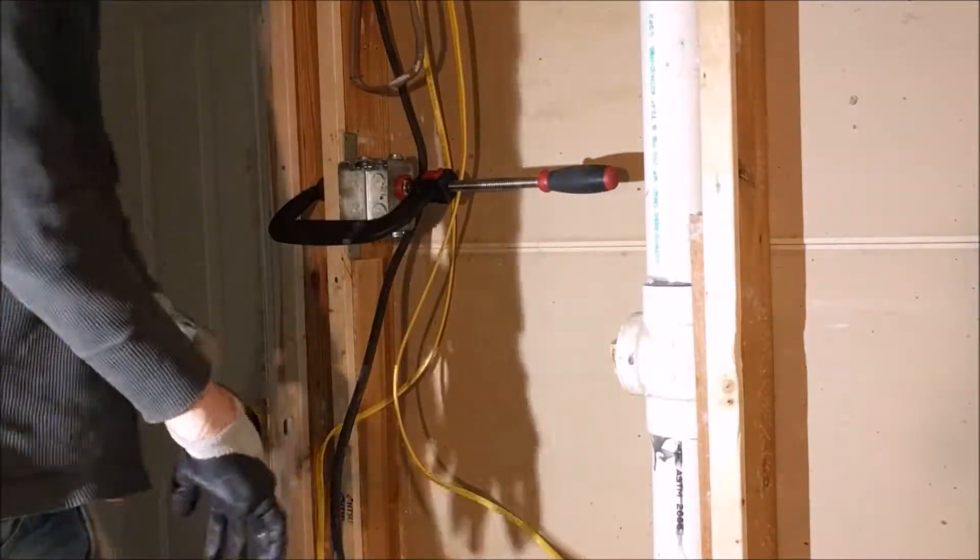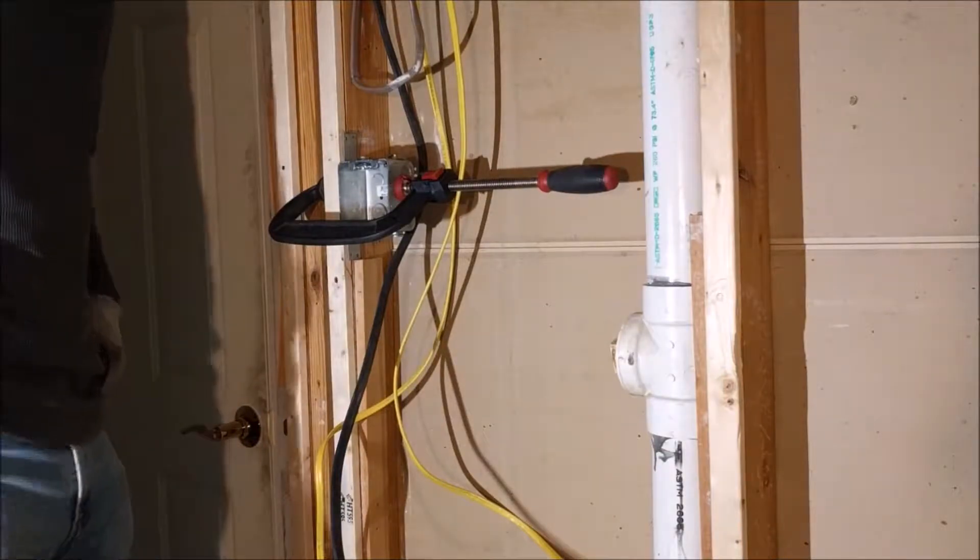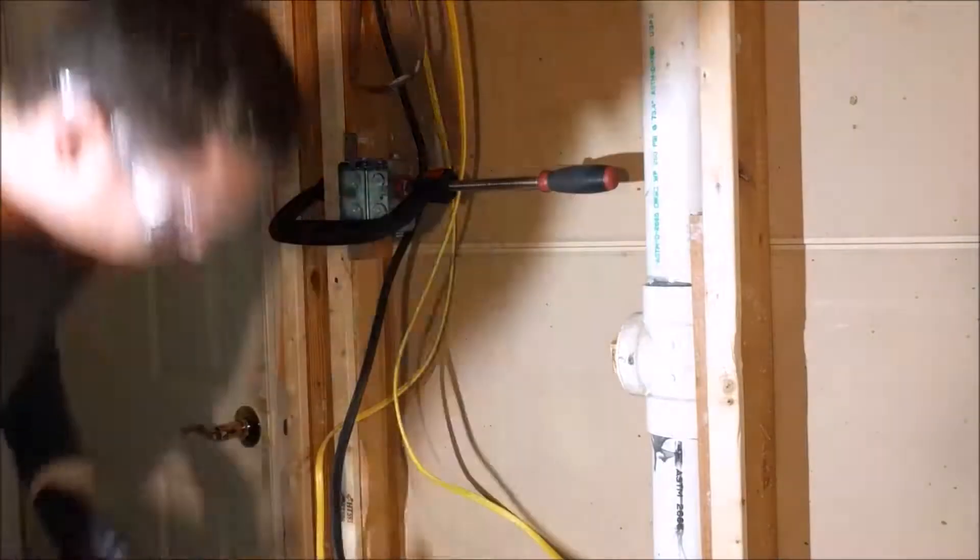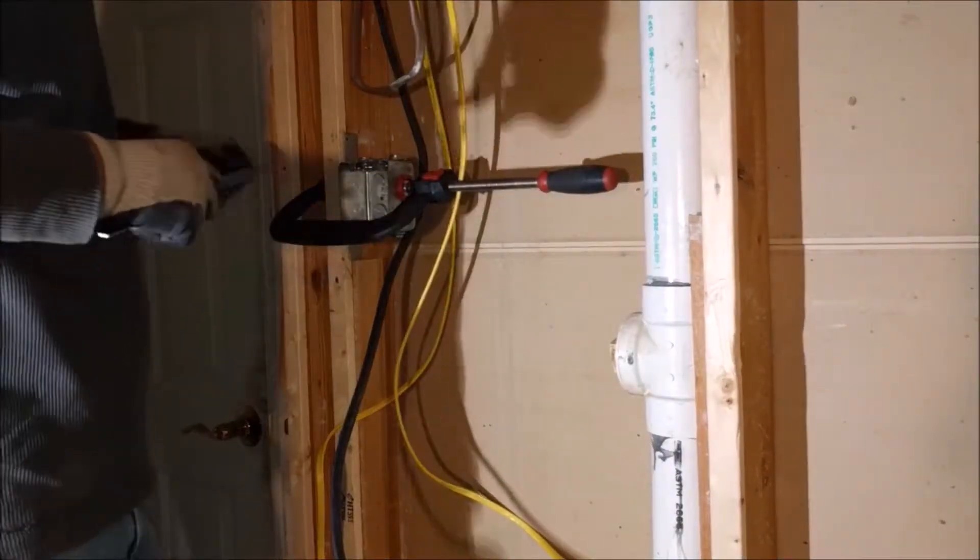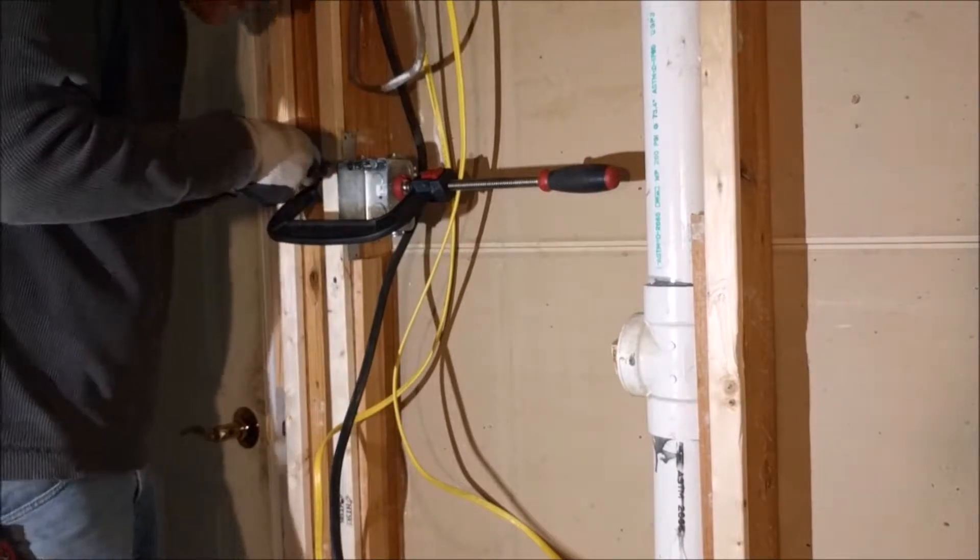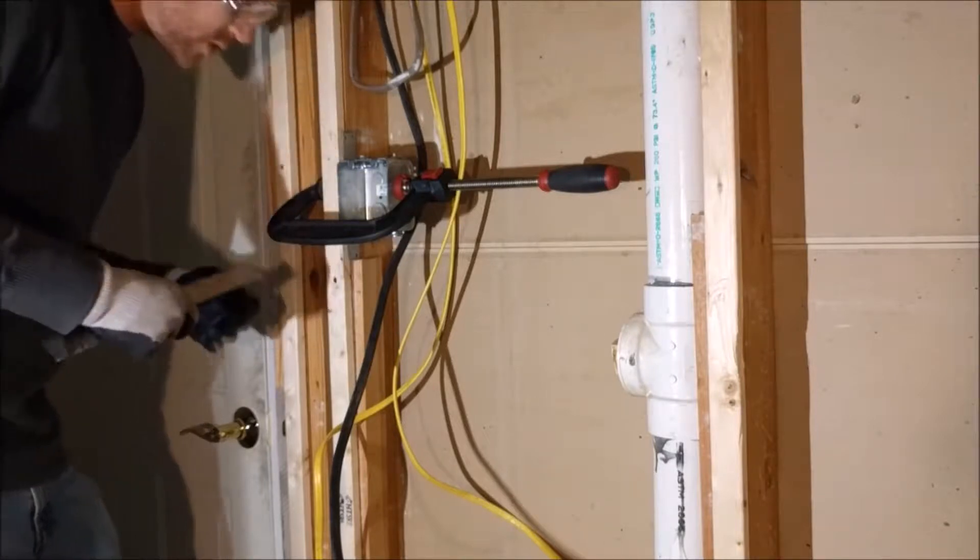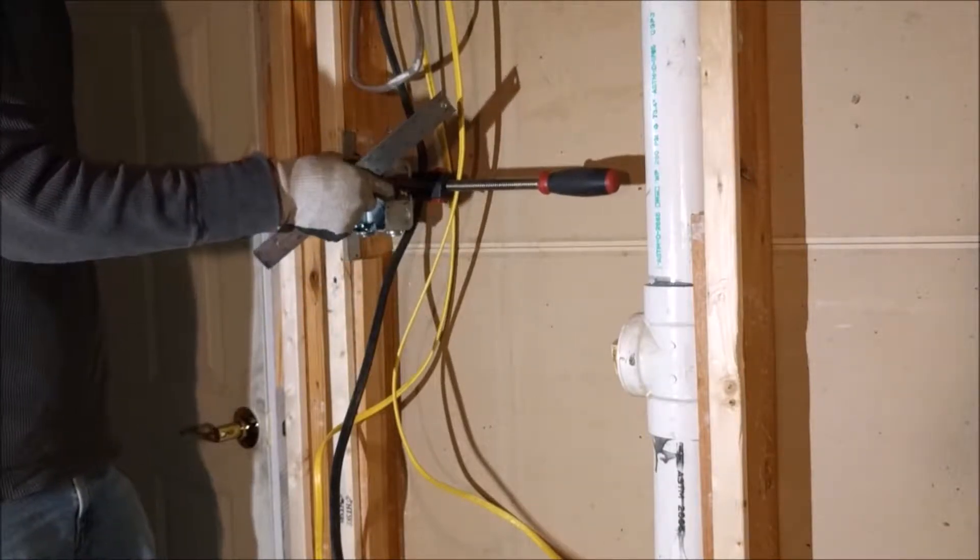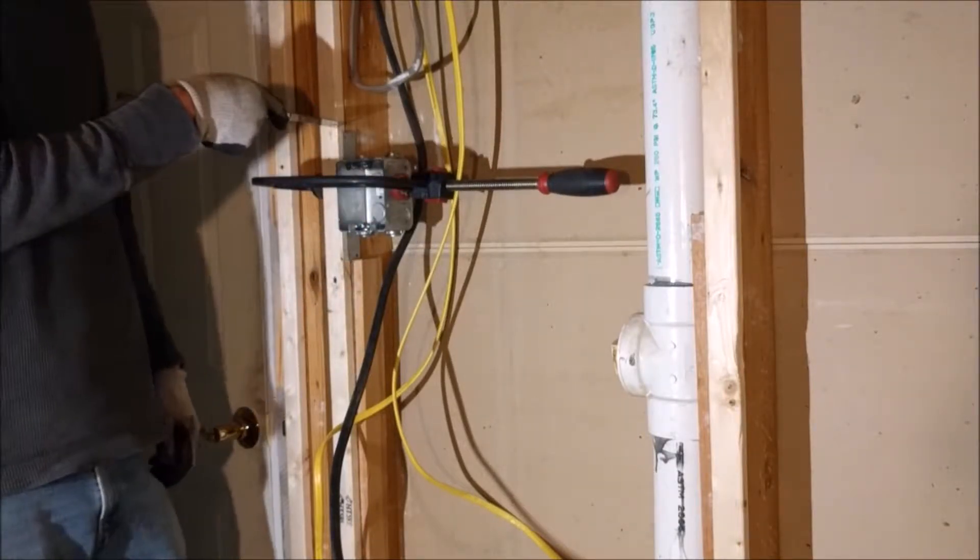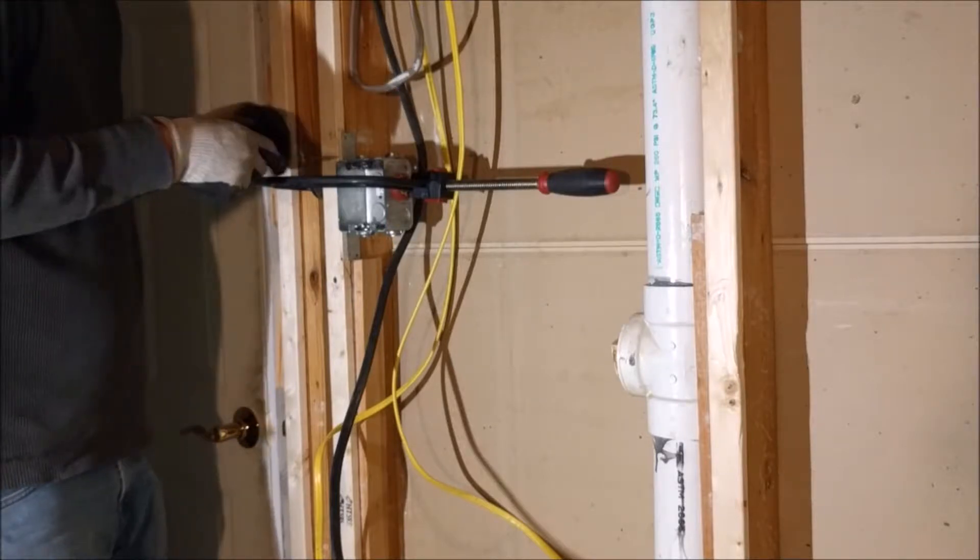Okay, so I'm ready to begin installing my junction box. I have all my cable connectors in, and now I'm just going to take my metal ruler here, and what I'm looking for is 5 1/8 inch spacing between the stud and my junction box edge.